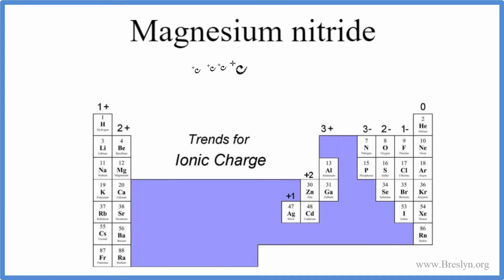Let's first write the symbol magnesium, that's Mg, and nitride, that's the nitrogen atom, N. We have our symbols.